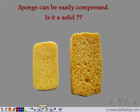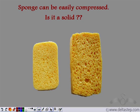You must have observed that a sponge can be easily compressed. Does that mean it is not a solid? No — if you observe, a sponge has small pores which trap air. When you compress it, the air is expelled. It is because of the expulsion of air that we can compress a sponge, and hence it is still a solid.